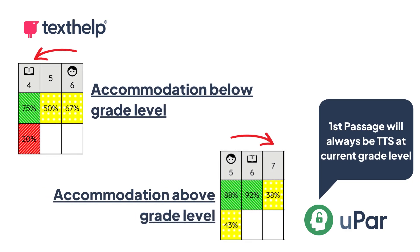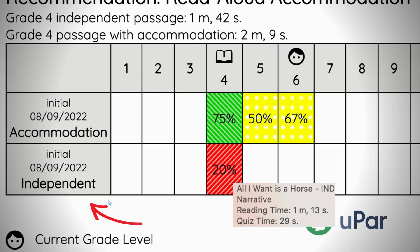If the student did not correctly answer 75% of the questions, the protocol went down a grade level. If the student correctly answered 75% or more, the protocol went up a grade level. Once a read-aloud accommodation has been determined, the student will receive an independent or silent read at the same grade level the accommodation was determined.